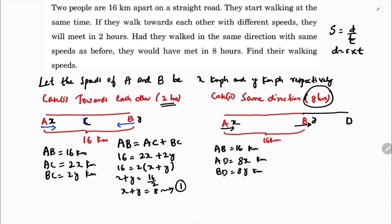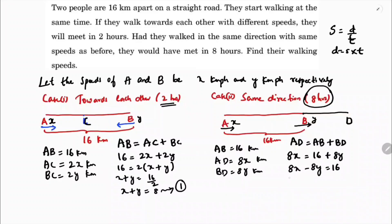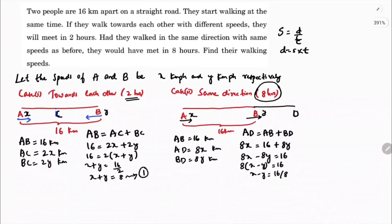From the diagram, AD equals AB plus BD. So 8x equals 16 plus 8y, which gives 8x minus 8y equals 16. Dividing by 8: x minus y equals 2. This is equation 2.